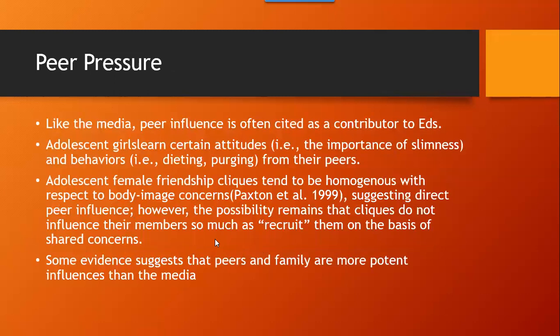Like the media, peer influence is often cited as a contributor to eating disorders. Adolescent girls learn certain attitudes — like the importance of slimness — and behaviors such as dieting and purging from their peers. Adolescent female friendship cliques tend to be homogeneous with respect to body image concerns, suggesting direct peer influence. However, the possibility remains that cliques do not influence their members so much as recruit them on the basis of shared concerns. Some evidence suggests that peers and families are more potent influences than the media.